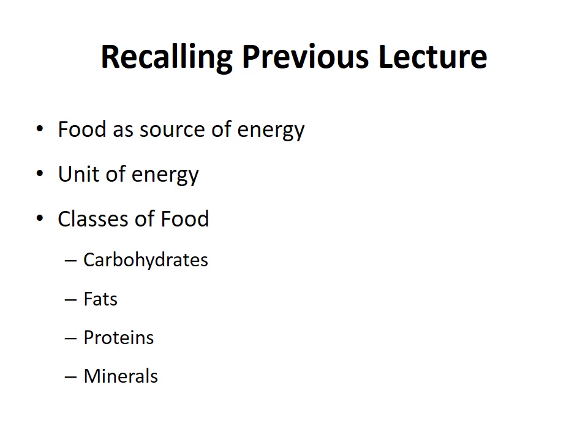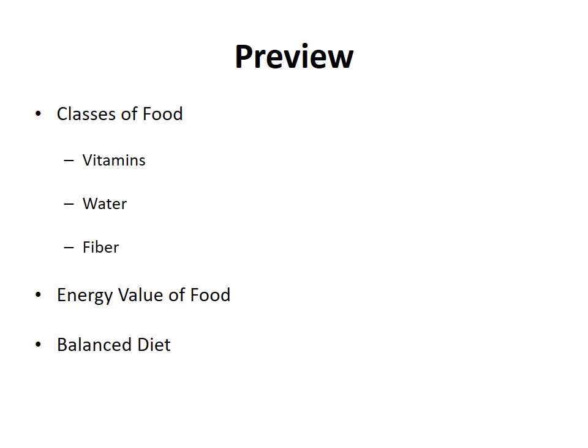In our previous class we covered that carbohydrates and fats are energy giving foods, their sources, and then protein — these are body building foods — and what are the sources of protein, and then protective foods, minerals, that these are required in very small amounts and are important for the regular functioning of our body. In this lecture we will cover the remaining classes which are vitamins, water, and fiber, and discuss energy value of foods and what is a balanced diet.